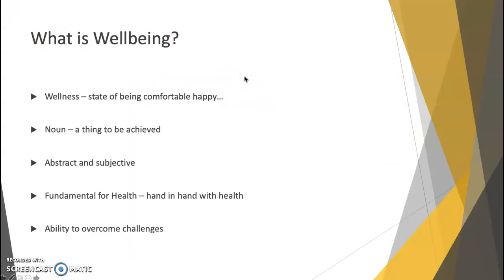Well-being has been defined by the Oxford Dictionary as a state of being happy — though I think that might be my definition. Well-being is a state of being comfortable; it's a state of being happy. However, well-being is a noun, so it's a thing to be achieved.